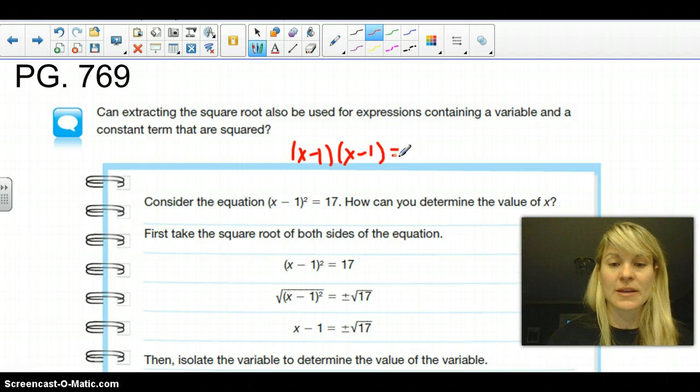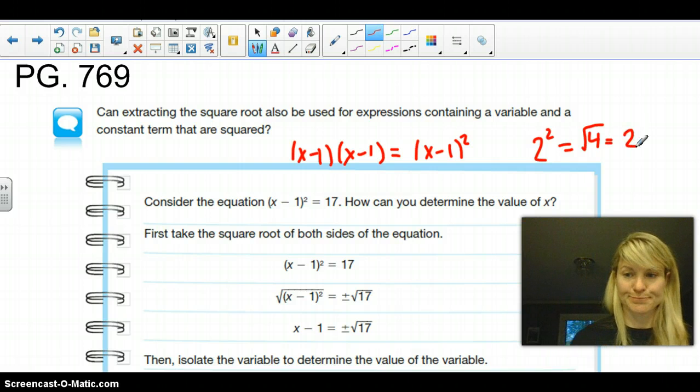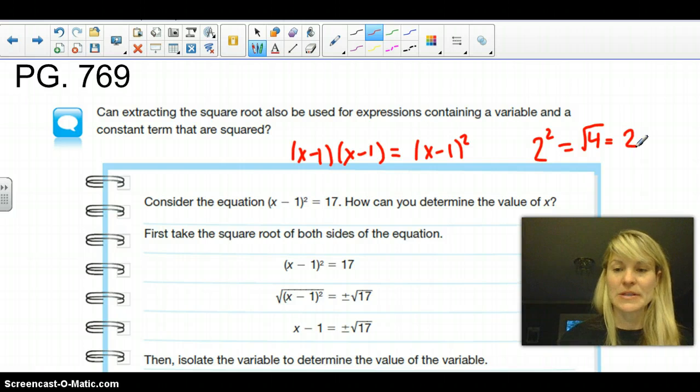But we can simplify that into (x - 1) squared. And we talked about yesterday how when you have something to the second power, that gives you the perfect square. And when you square root it, it takes you back down to the base number that was squared.